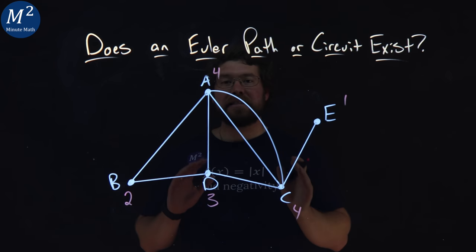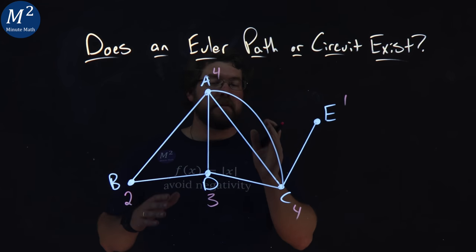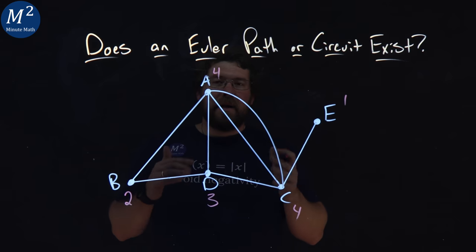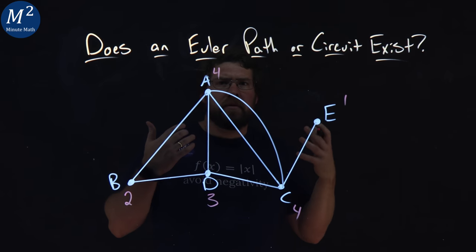So now we've identified all the degrees of every single vertice. We need to then see how it applies to our theorems.